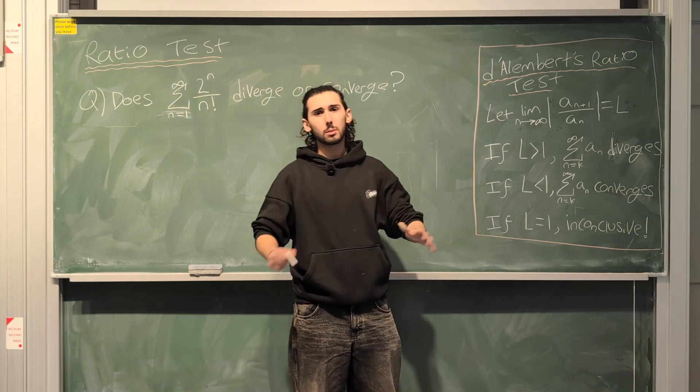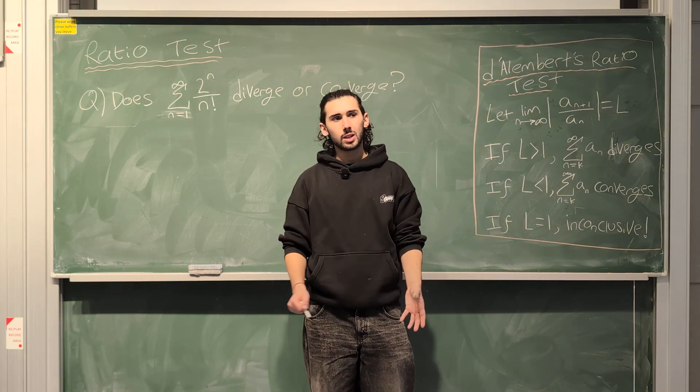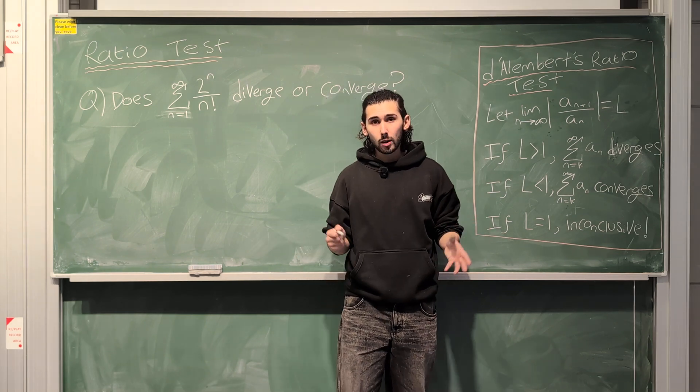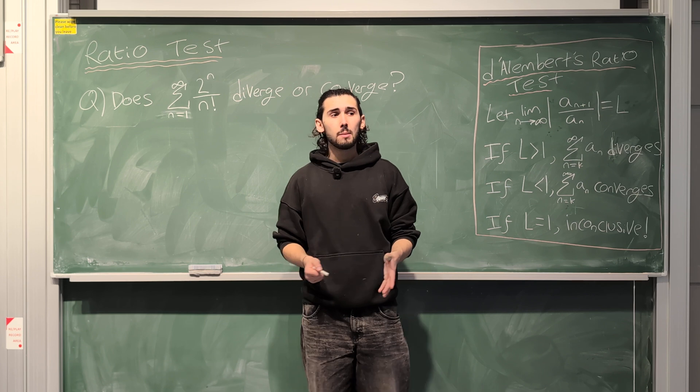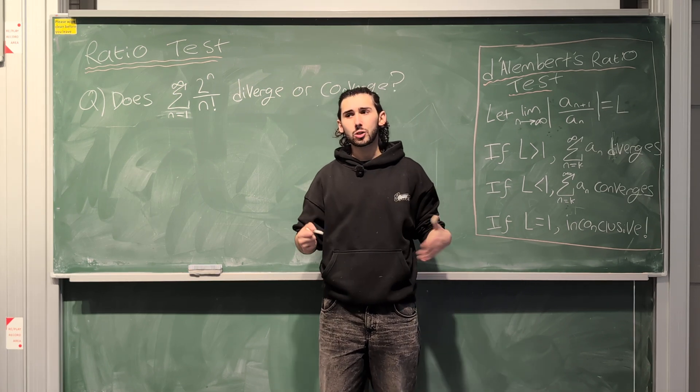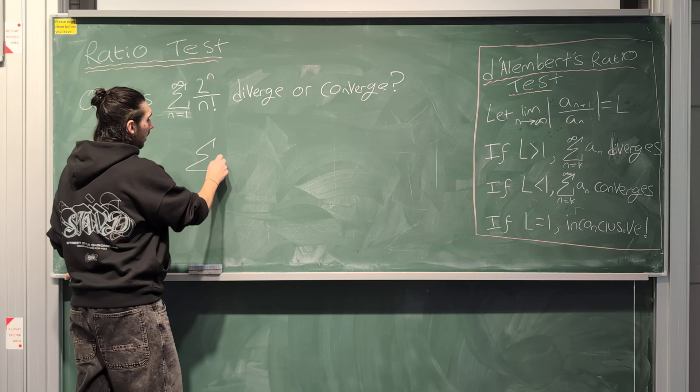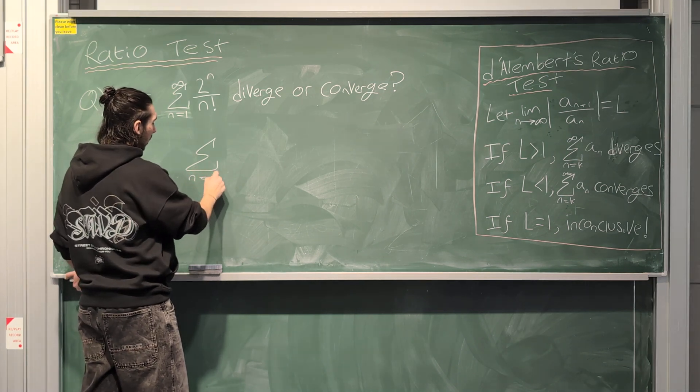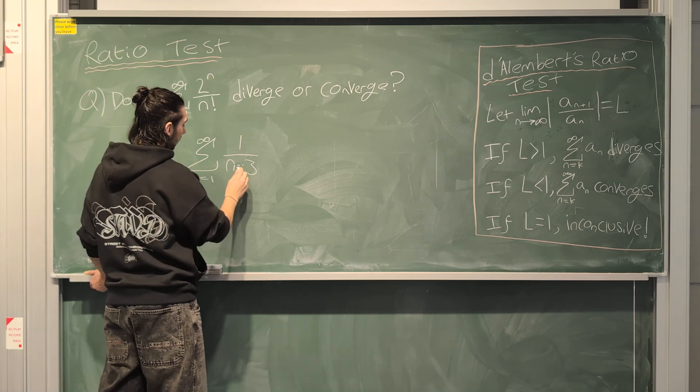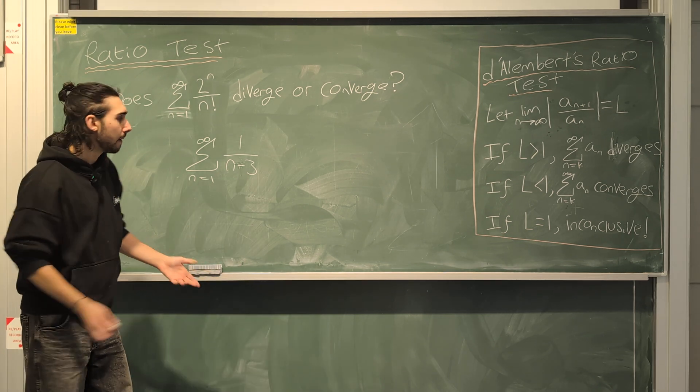As you already know because I've mentioned it so many times in the previous videos, in order to make a series converge or diverge, the first finitely many terms cannot do anything about that. The first finitely many terms just add up to a finite number with obviously the condition that you don't have some sort of function that makes you divide by zero. For example, if you had the sum from n equals 1 to infinity of 1 over n minus 3, then obviously if n was the number 3, then you would have infinity and then it doesn't converge.